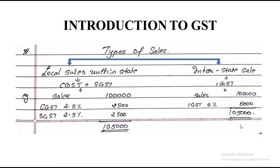If you look carefully, the total GST amount to be paid is equal regardless of which state you are from. The key difference is: if within the same state, GST is split — half goes to the central government and half to the state government. For interstate sales, the entire amount goes to the central government.